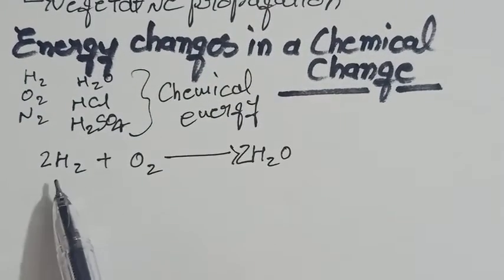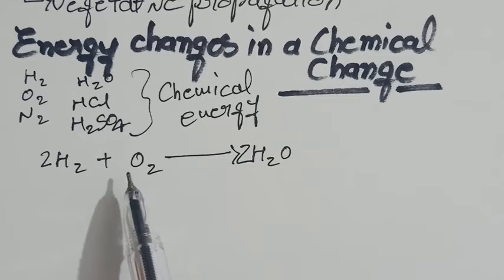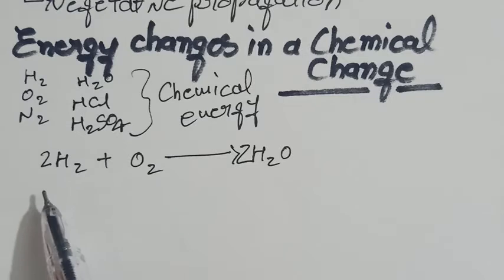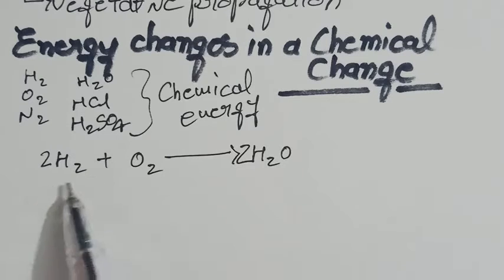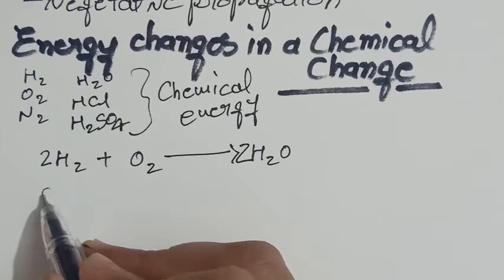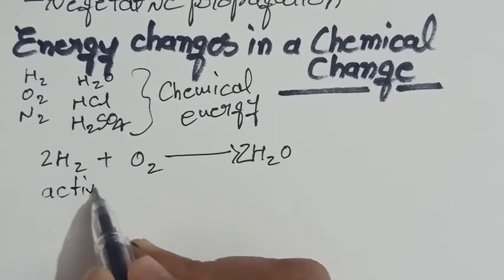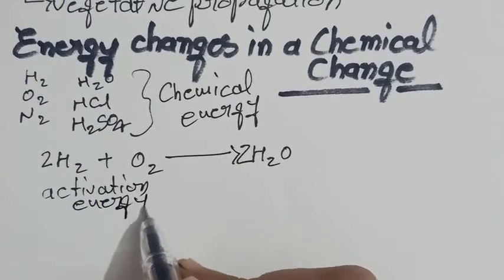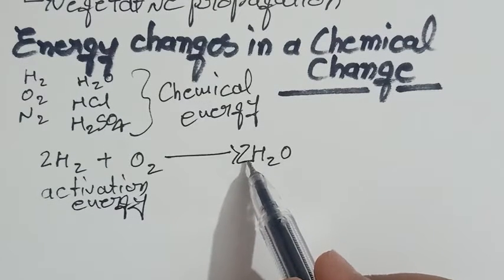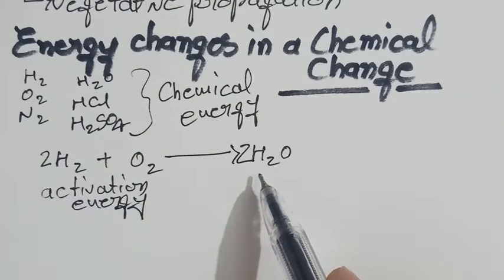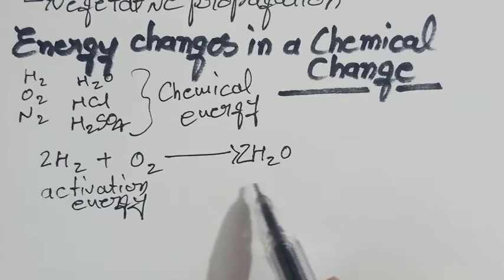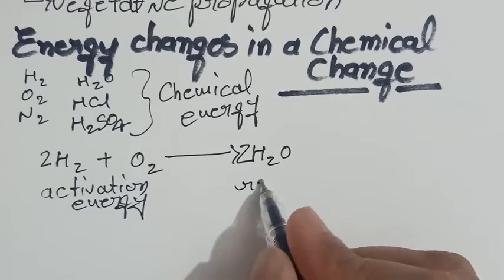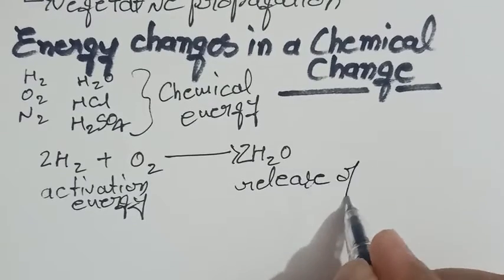In a chemical reaction, when a chemical reaction takes place, some energy is required to break the bonds between the molecules of reactants. This energy is called activation energy. Once the bonds of the participating reactants break, they form new kinds of bonds to form a new molecule with release of energy.